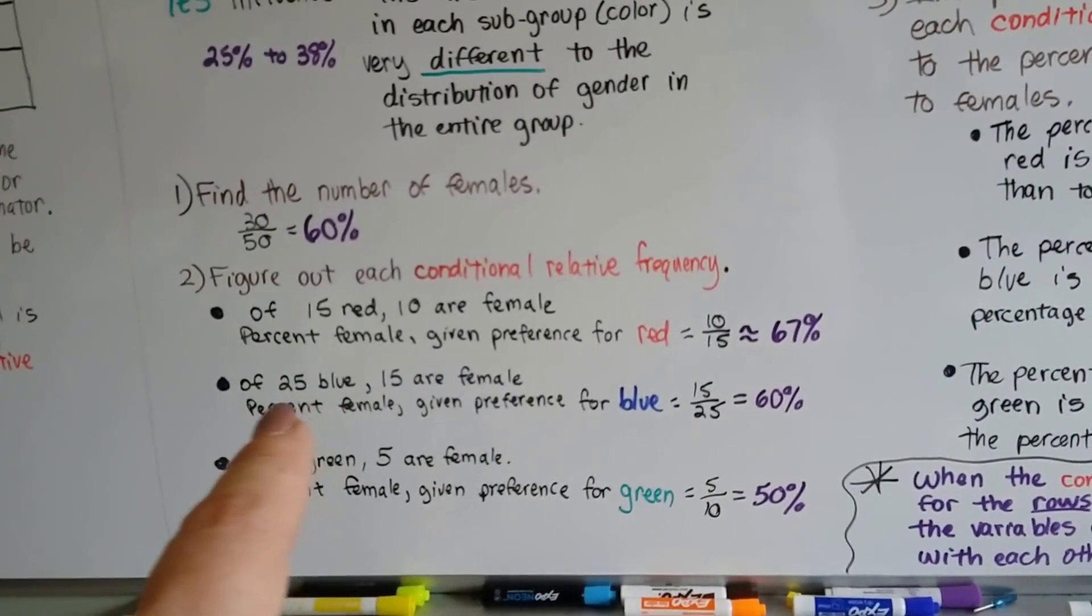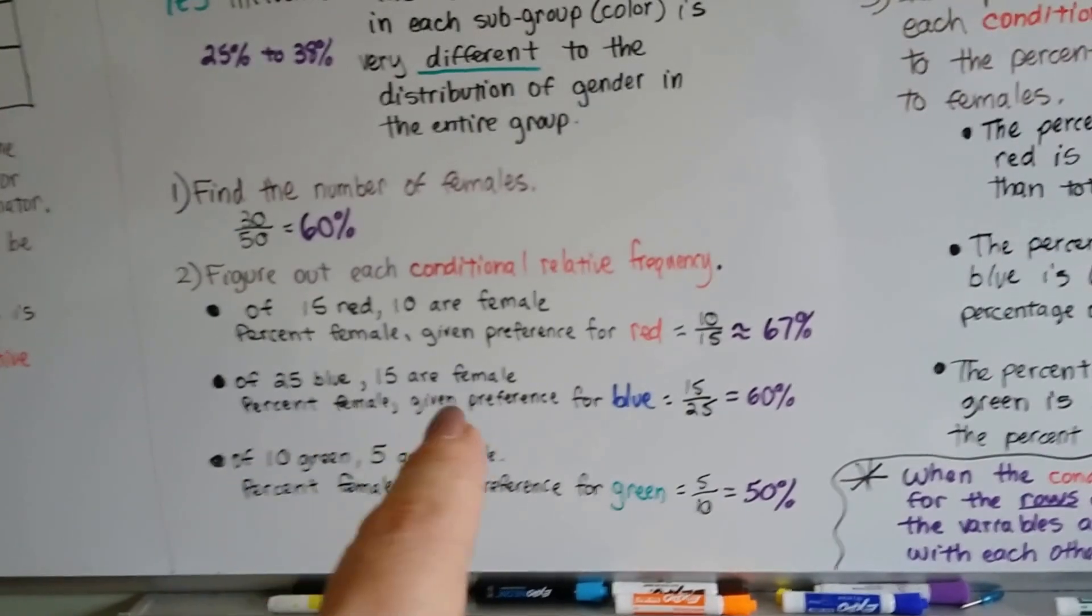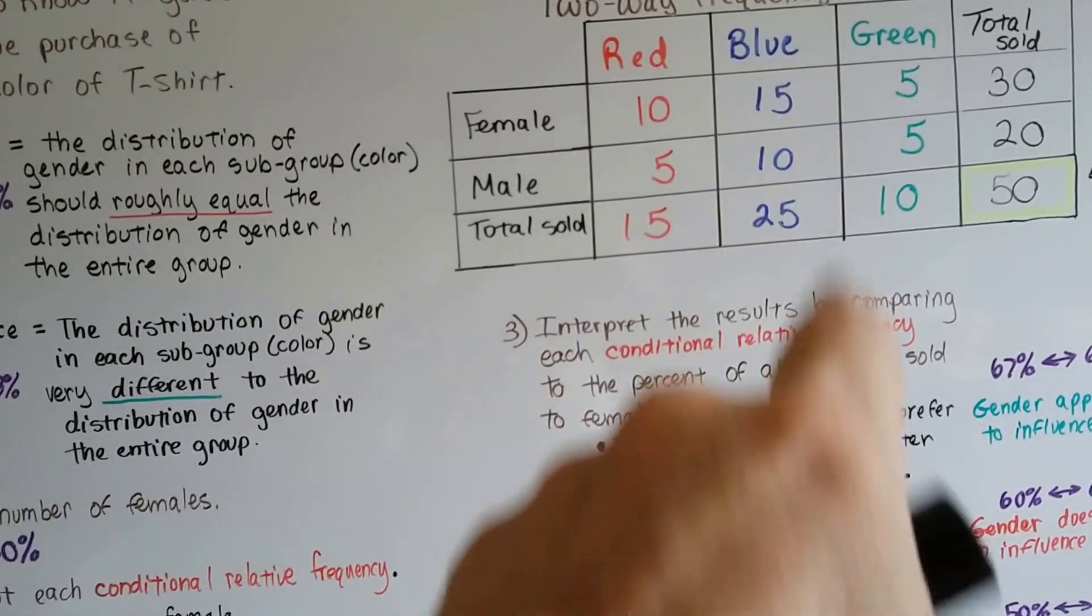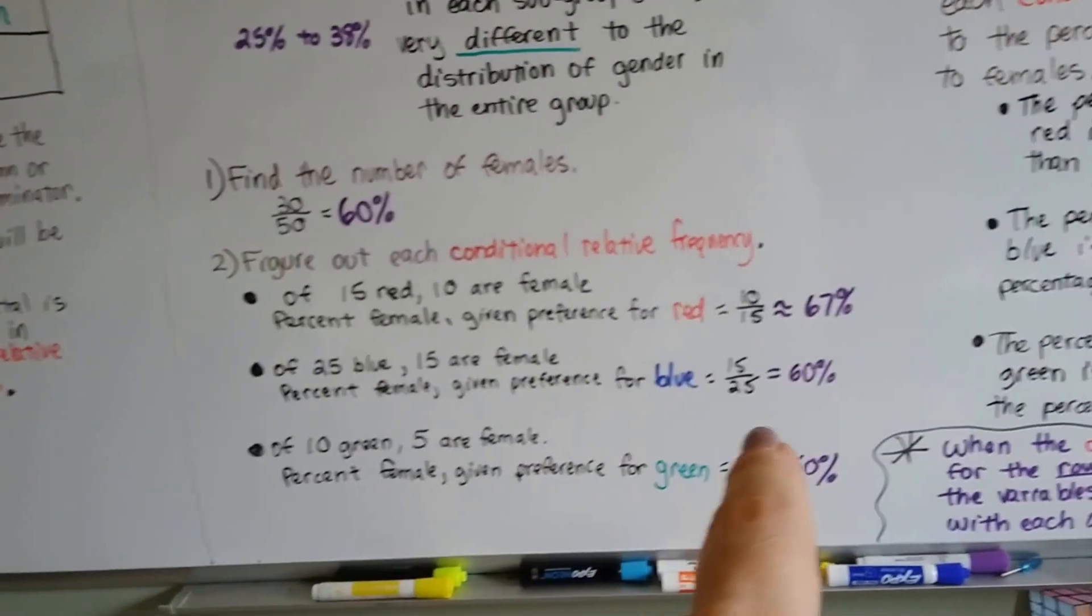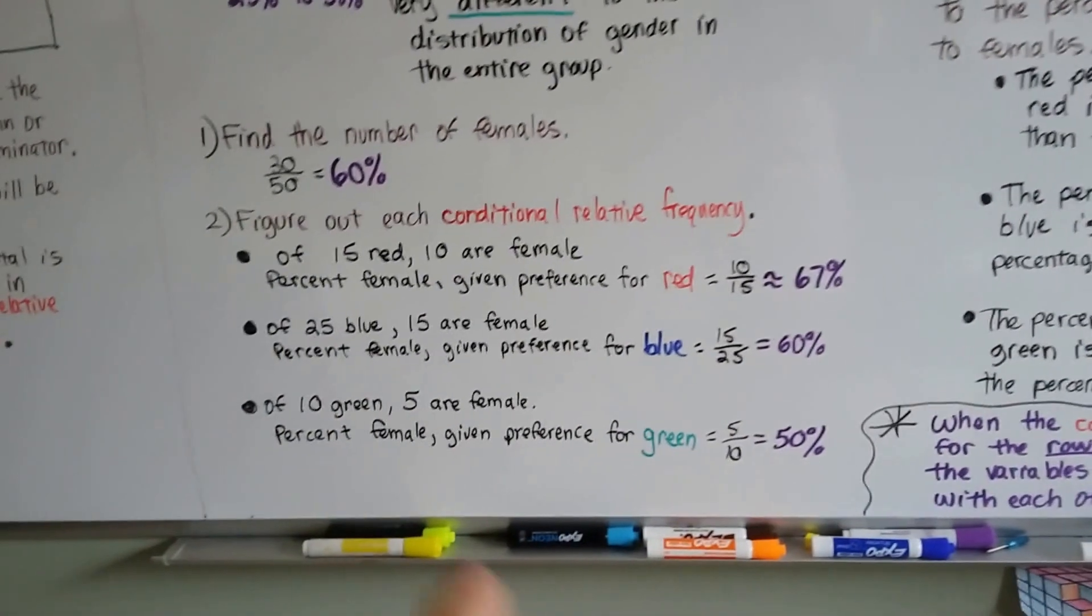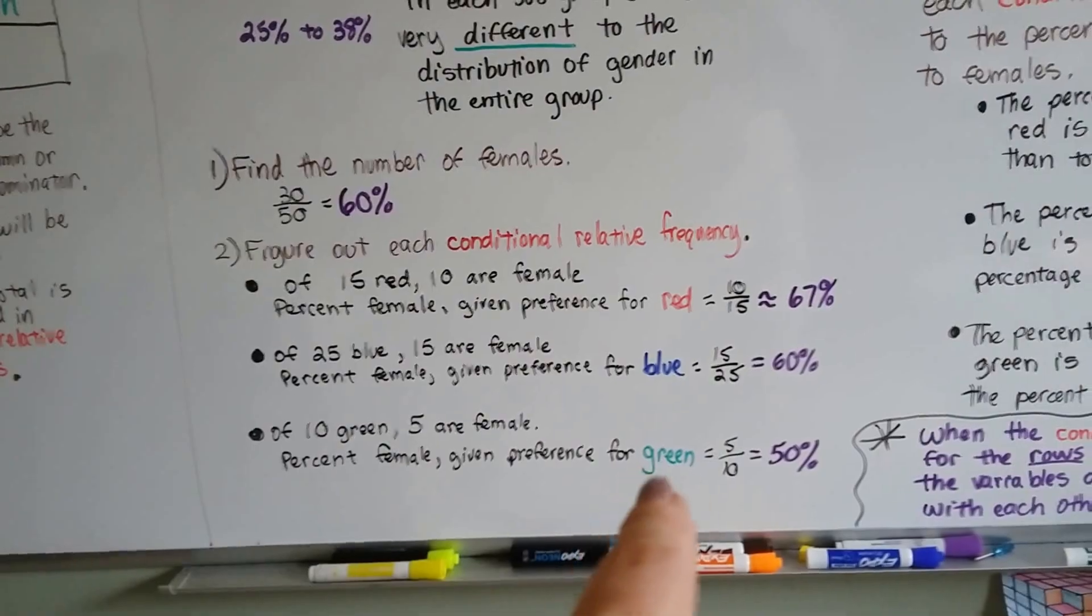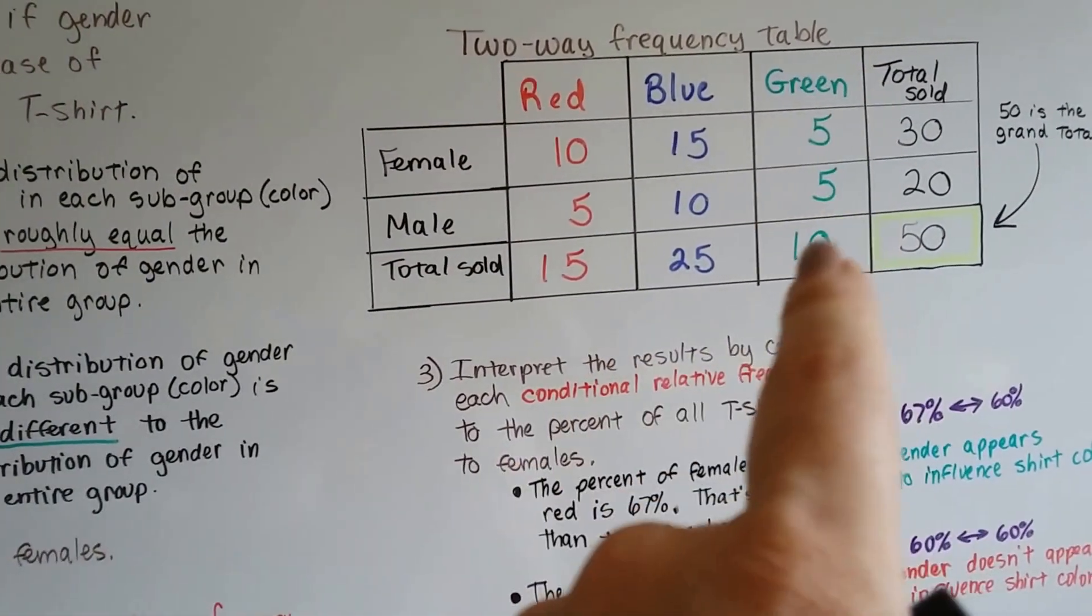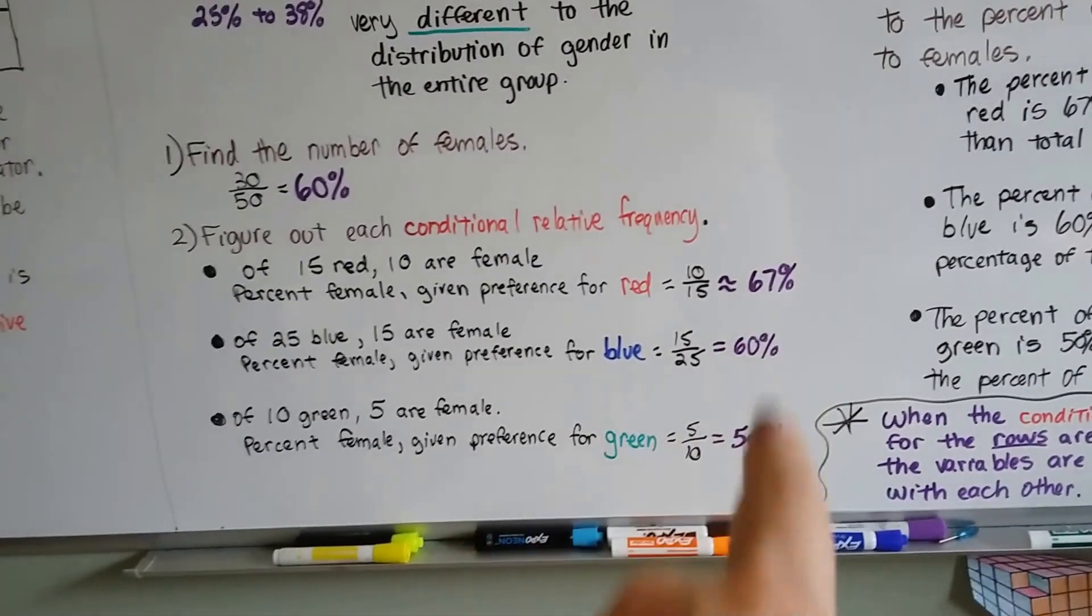Now, of the blue, 25 sold, 15 are female. So the total given for blue is 25, 15 are female. So we have 15 over 25 for our conditional relative frequency. And 15 divided by 25 is 0.60 or 60%. Now we can do the green. The percent female given the preference for green, green total is going to be our denominator. And we have 5 for female, that's 5 over 10, and that's 50%.